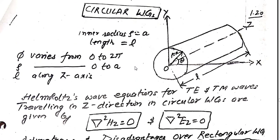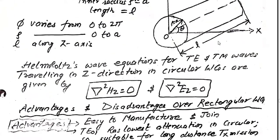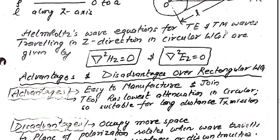A circular waveguide is basically a tubular circular conductor, as seen in this particular figure, where the inner radius is assumed to be a and the length is along the z-axis. Here φ varies from 0 to 2π, ρ varies from 0 to a, and the direction of propagation is towards z. Helmholtz's wave equations for TE and TM waves traveling in the z-direction in a circular waveguide are ∇²Hz = 0 and ∇²Ez = 0.